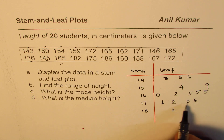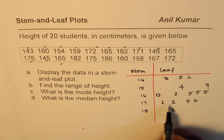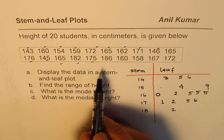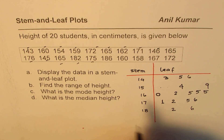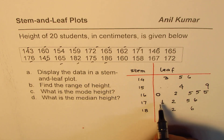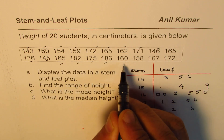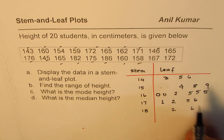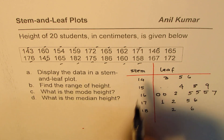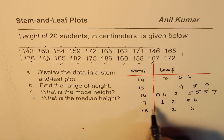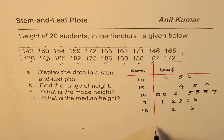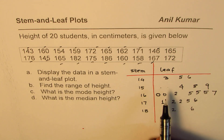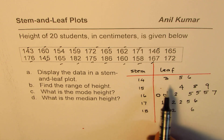You can see how I'm arranging these numbers in increasing order. After entering 175, we continue with 186, 166, and 167, and then 172. That is how our stem and leaf plot looks once filled up.